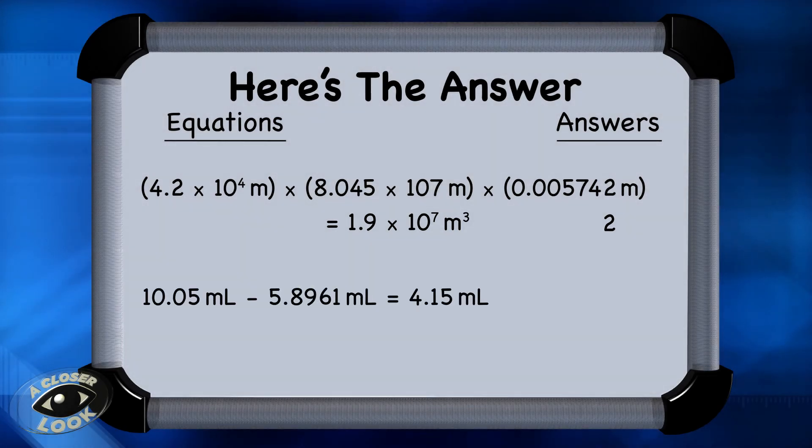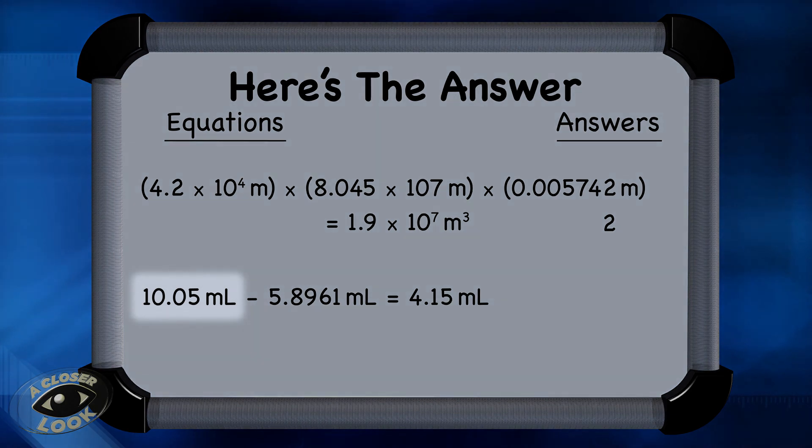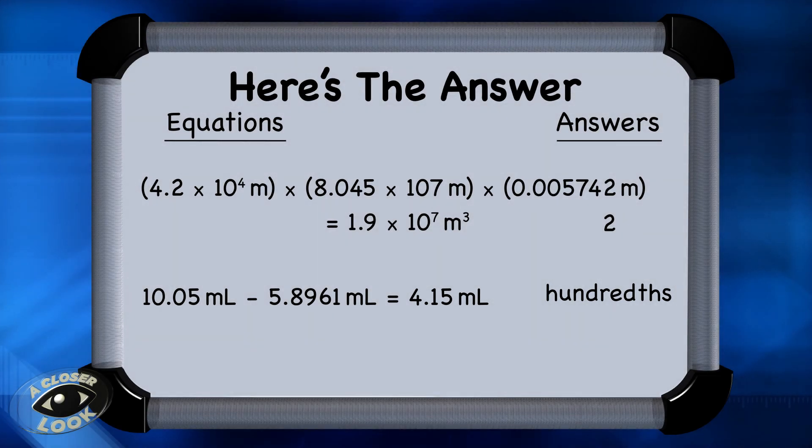The last one is a subtraction problem. Use the rule that says to determine which starting value has the fewest number of decimal places, and then report the final answer to that number of decimal places. This one is 10.05, only to the hundredths place. So the final answer, 4.15, must go to the hundredths place. If you got that one right, you're doing great.